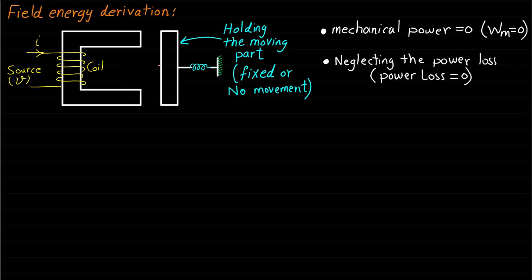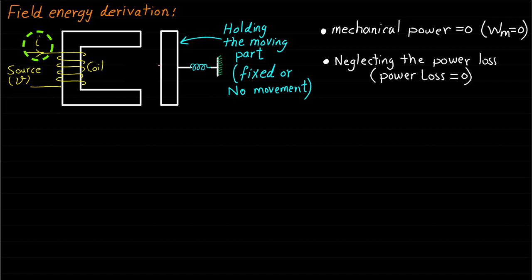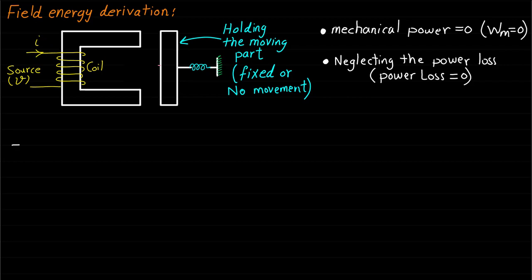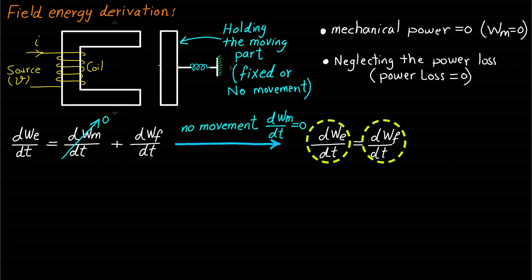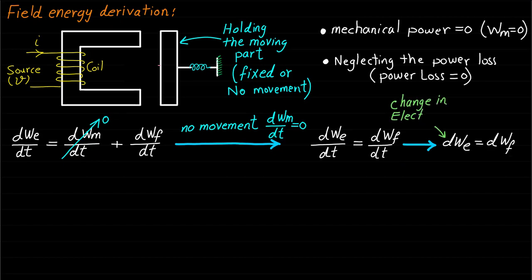Now, if we apply a voltage V across the coil and a current I flows through the coil, all electrical energy will go toward the rate of change in the magnetic field energy because the mechanical power is zero. In other words, the change in electrical energy is equal to the change in the field energy.